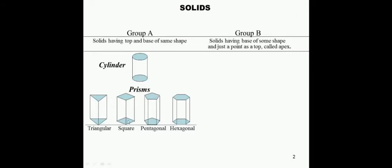For a square prism, the base and top are square in shape, and there will be four vertical rectangular faces. For a pentagonal prism, the base and top are a regular pentagon, and there will be five vertical rectangular faces. For a hexagonal prism, the base and top are a regular hexagon, and there will be six vertical rectangular faces.